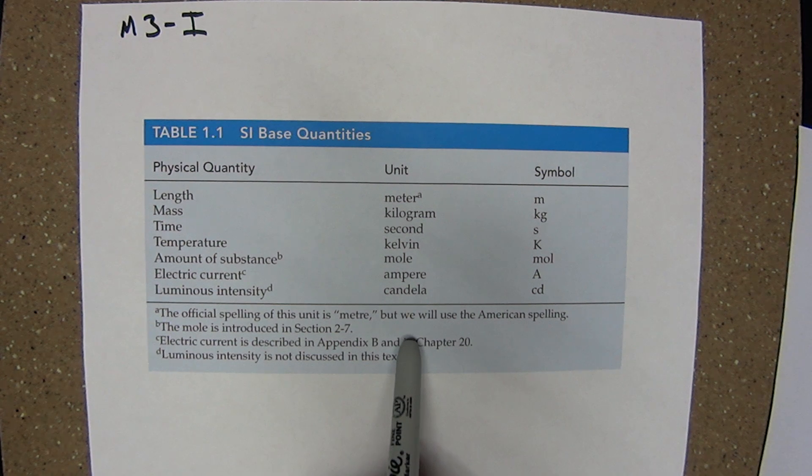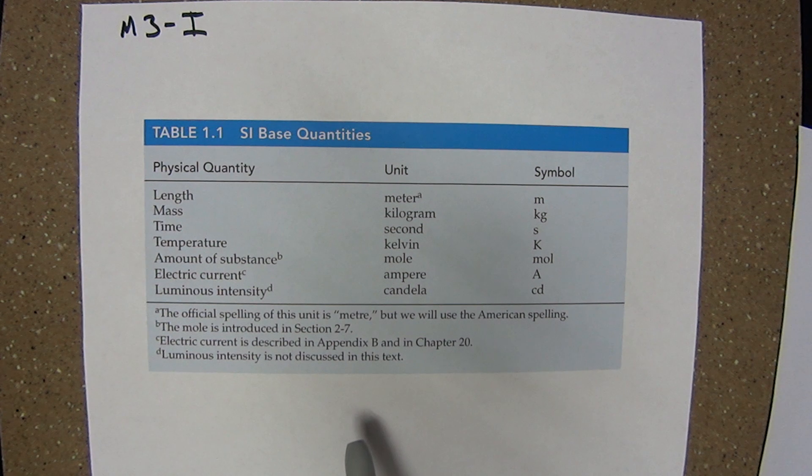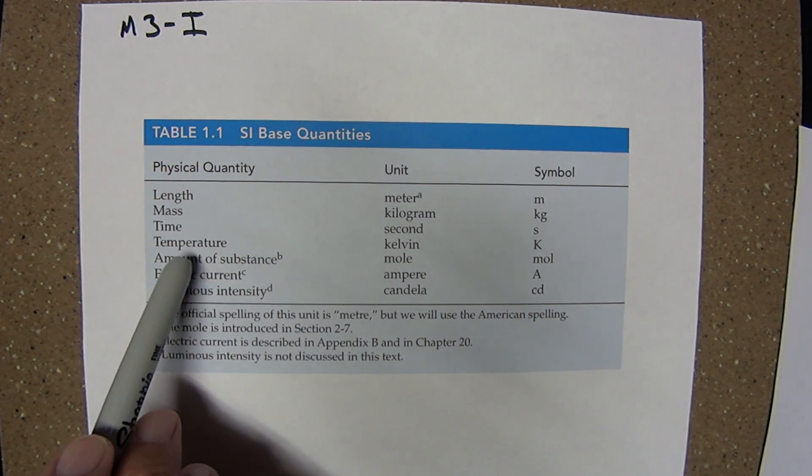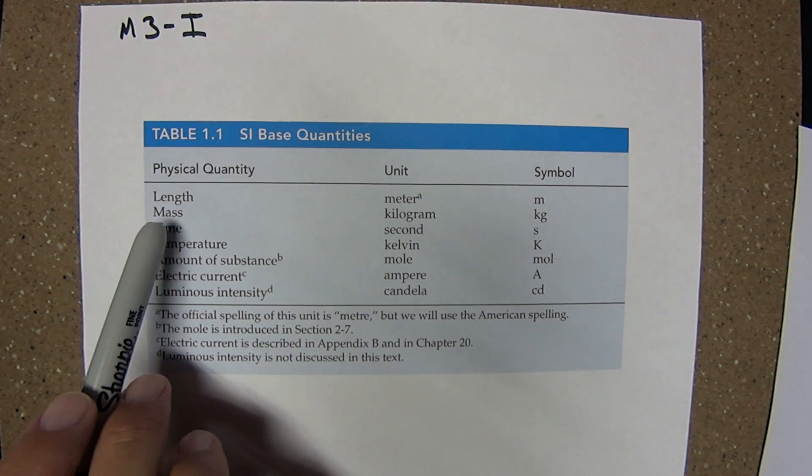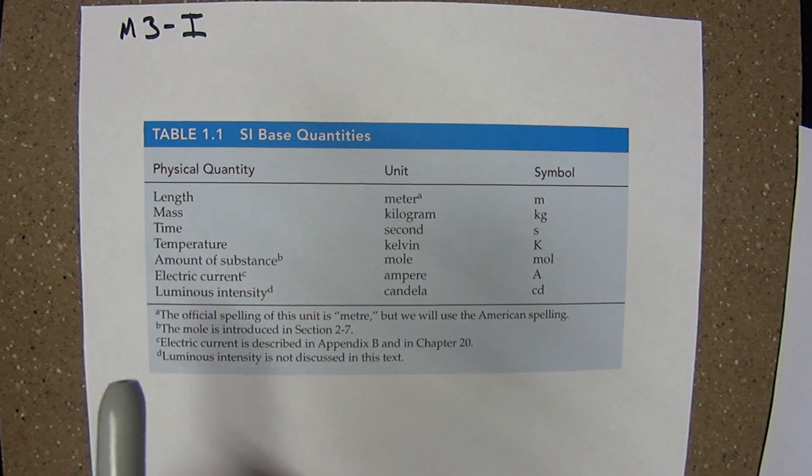You should know everything in this table. Many quantities can be expressed directly in one of these base units. For example, the temperature change associated with a chemical reaction, or the mass of substance consumed in that same reaction.